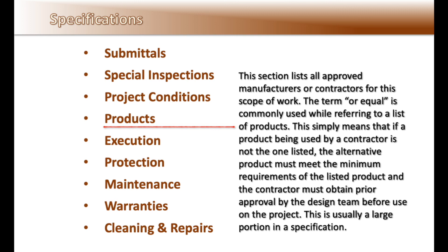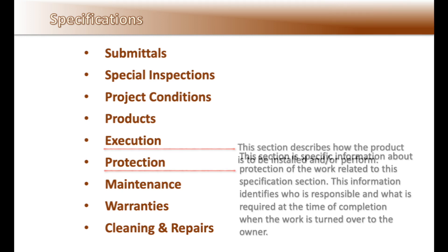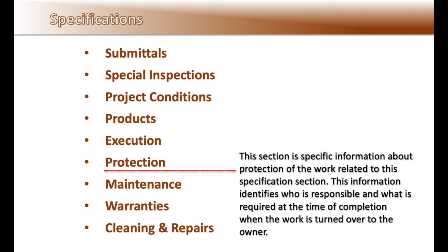Listing out materials is usually a large portion of a specification. The execution section describes how the product is to be installed and/or performed. The protection section contains specific information about the protection of the work related to this specification section, identifying who is responsible and what is required at the time of completion when the work is turned over to the owner. This section has caused many contractors extra expense due to not applying proper attention to these requirements.